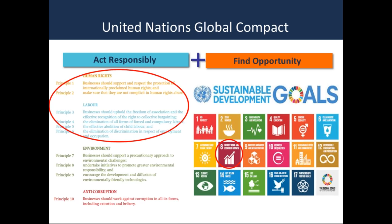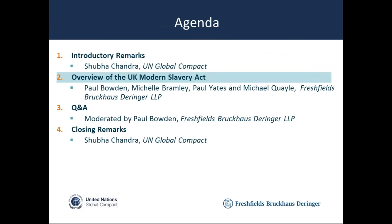With that introduction, I'd now like to turn it over to our colleagues at Freshfields. Paul Bowden is a partner in Freshfields' London office on the Disputes Team, co-head of the firm's Low Carbon Energy Group, leader of its Business and Human Rights Team, and partner responsible for global corporate responsibility. Michelle Bramley is global head of knowledge for Freshfields' dispute resolution practice. Paul Yates is head of pro bono at Freshfields in London and a member of the firm's Global Business and Human Rights Group, with a particular focus on advising businesses on their approach to the Modern Slavery Act. Michael Quayle is an associate in Freshfields' London office in the EU dispute resolution group.